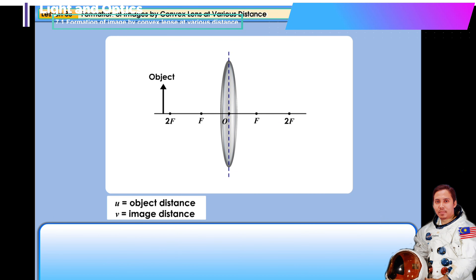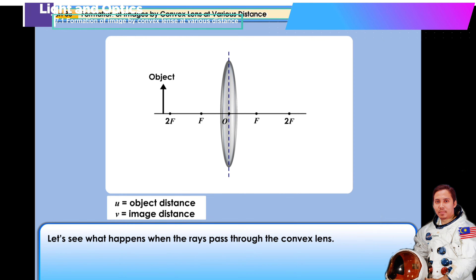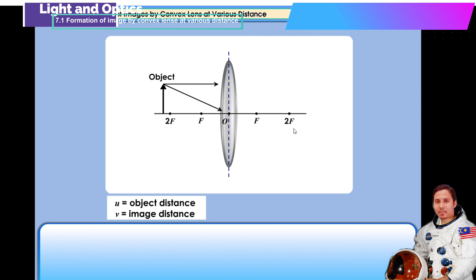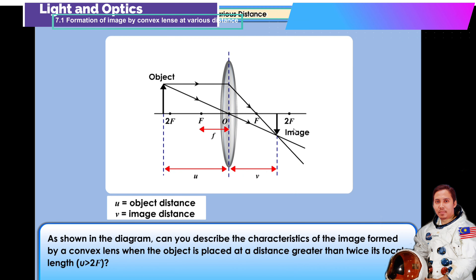Formation of image by convex lens: What happens when you place an object at a distance greater than twice the focal length of a convex lens? Let's see what happens when the rays pass through the convex lens. This can be symbolized as u > 2f. Can you describe the characteristics of the image formed by a convex lens when the object is placed at a distance greater than twice its focal length?